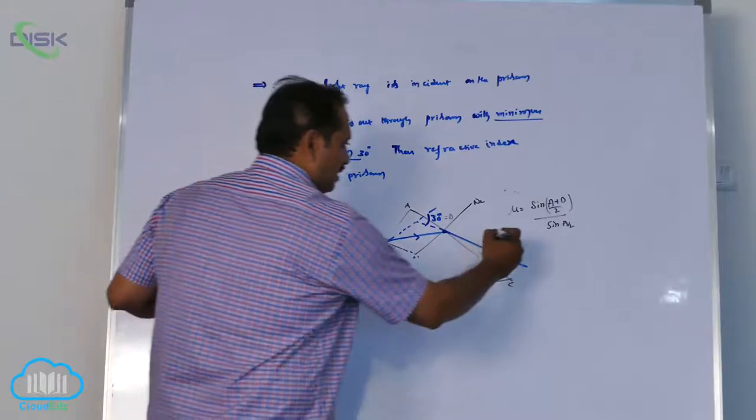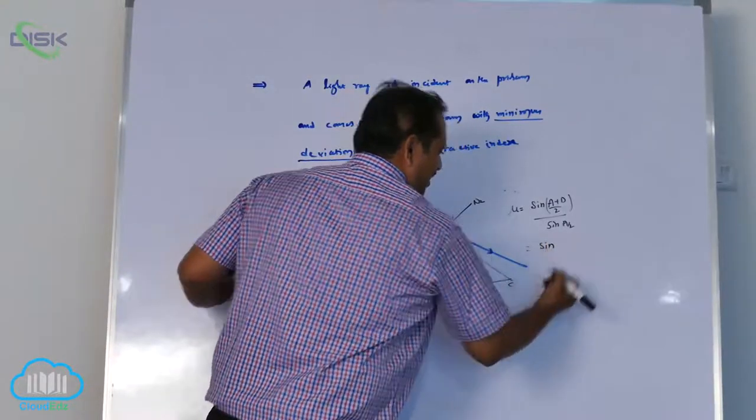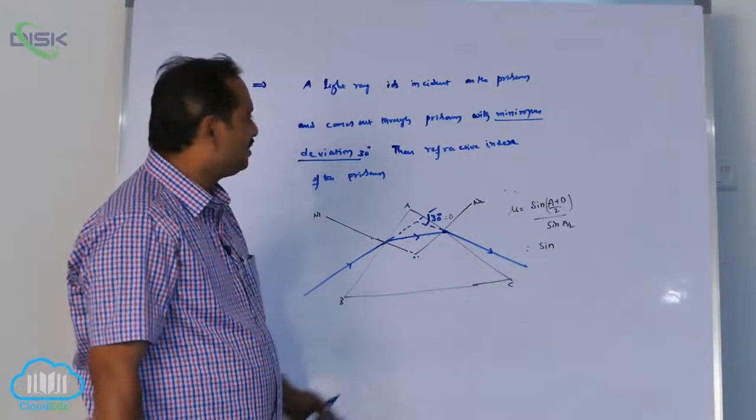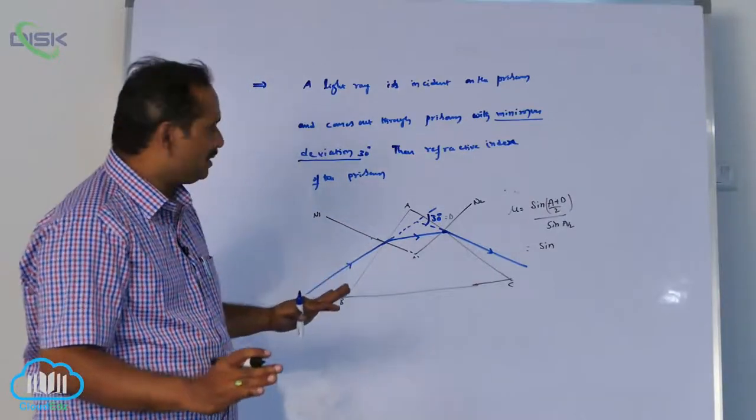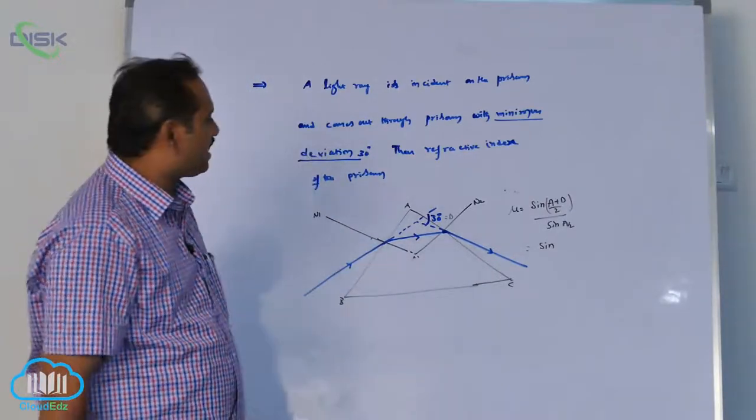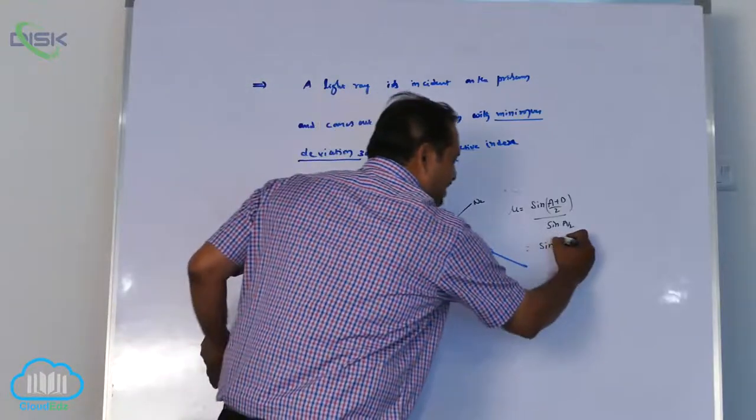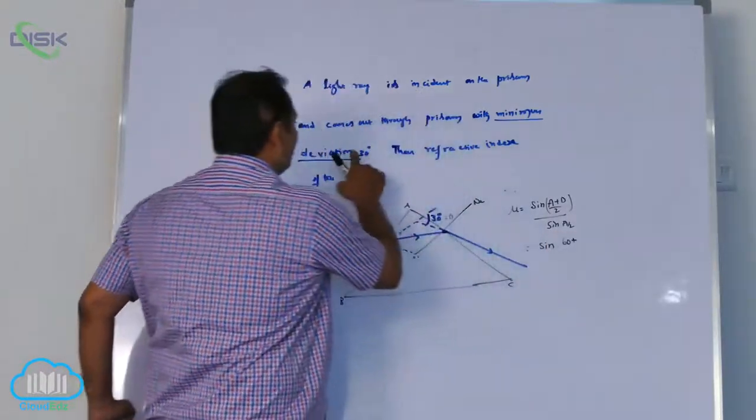Sine A... He doesn't say anything about prism. If they don't mention anything in the prism you should approach with an equilateral triangle - equilateral triangle 60 degrees, minimum deviation 30.